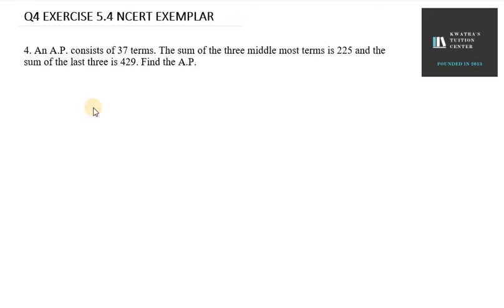Hello everyone, let's start with question number 4. It says an AP consists of 37 terms, so my N is 37 here. The sum of 3 middle most terms is 225 and the sum of last 3 is 429.